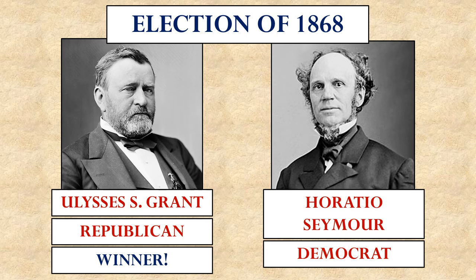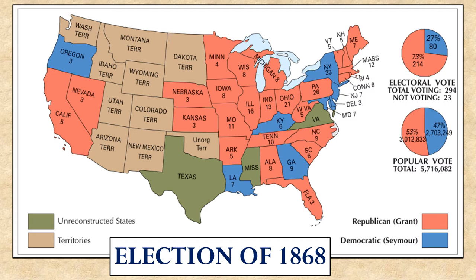Eventually Andrew Johnson's term ended and the Republicans nominated the hero of the Civil War, Ulysses S. Grant, as their presidential candidate. He won easily over Horatio Seymour, the Democratic nominee, winning not only most of the free states but many of the Southern states as well — because the military occupation meant that those opposing the Radical Republican agenda were not allowed to participate, while the newly freed slaves were being allowed to vote.